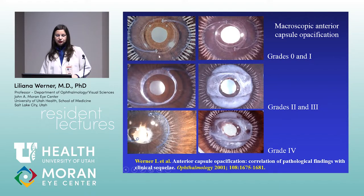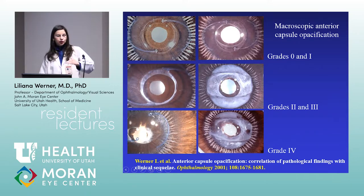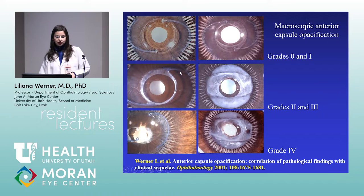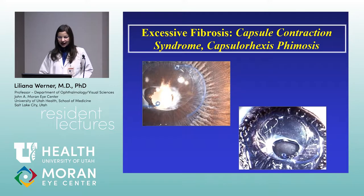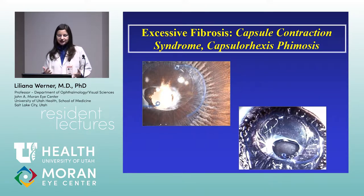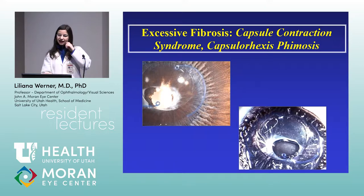Histopathological sections at the level of the anterior capsule show that with some materials there is nothing or just a monolayer of cells, while others show very thick fibrocellular tissue. The worst was the old plate-type silicone lenses — wherever the anterior residual capsule touched the IOL, it was completely opacified. This is essentially an index of biocompatibility.